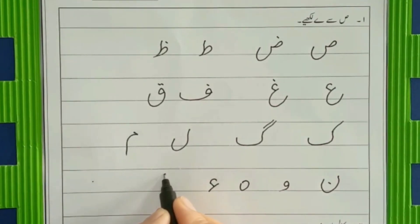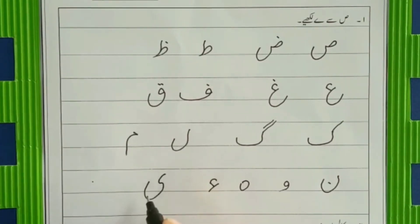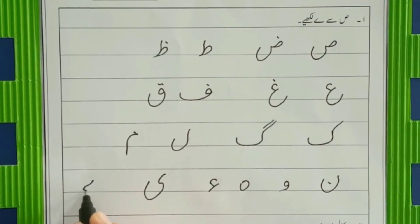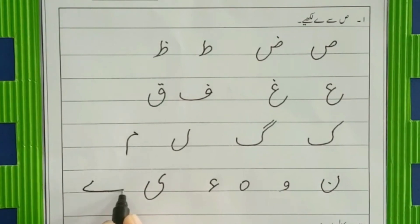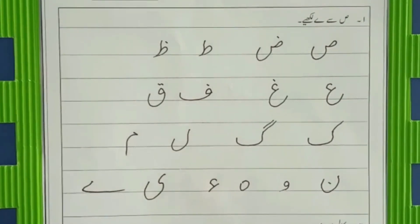Now it's time to write down chotiye. Make a slant line, a small curve and a big belly. Chotiye. And badiye is make a slant line, a small curve and go back by touching the line. Badiye.